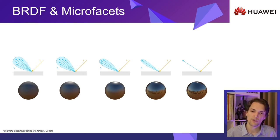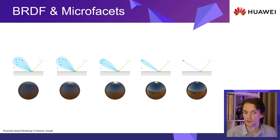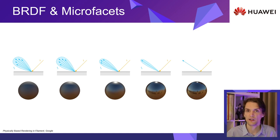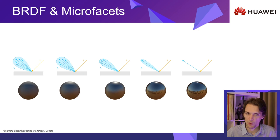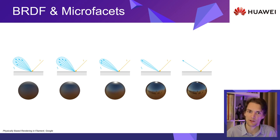That function is crafted so that just by varying a single factor called roughness, we can influence the orientation of these facets. The rougher the surface, the more light will be scattered and the wider the specular lobe. And the smoother the surface, the more mirror-like the surface will be, and the narrower the specular lobe.